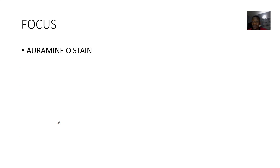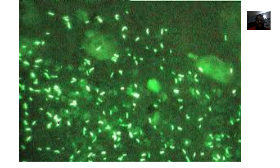We're looking at the Auramine O stain. The way I remember it is I tag it as a stain that announces the presence of the organism — it will make every other place dark. Why? To make the organism glow. It's just like a searchlight or a security light that has located it.